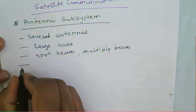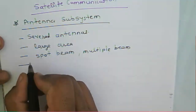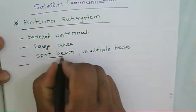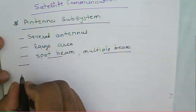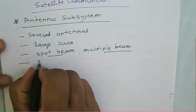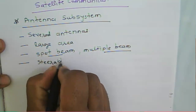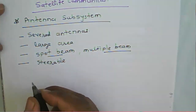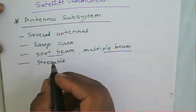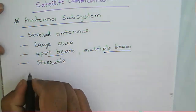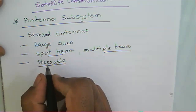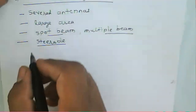The antenna is required to provide various beam shapes using a spot beam antenna or a multiple beam antenna. Also, the antenna can be movable — we can say it is a steerable antenna, which can move in any direction as per the requirement. So that mechanism needs to be present in the satellite so that the antenna can be repositioned.